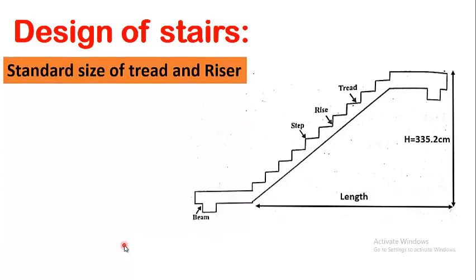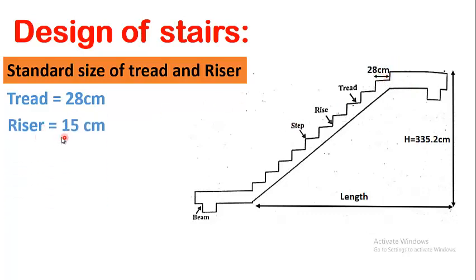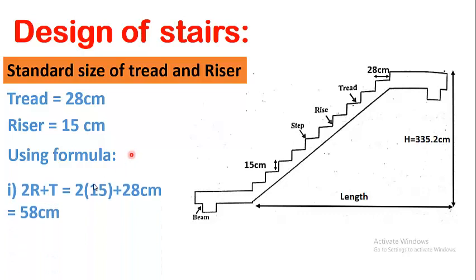As discussed in my previous video, the standard size of thread is 28 centimeters — as you can see here, this is the thread and its length is 28 centimeters. The standard size of riser is 15 centimeters — this height is called the riser. Using the formula: 2R + T = 2×15 + 28 = 58 centimeters.